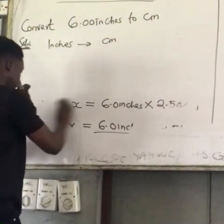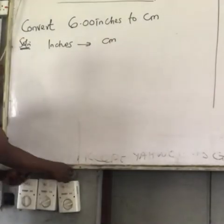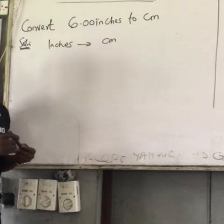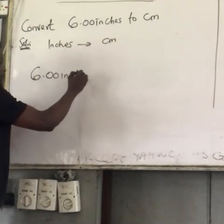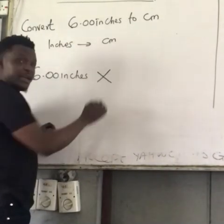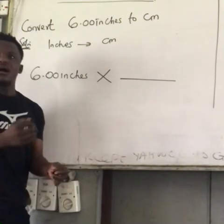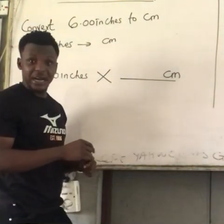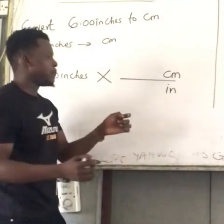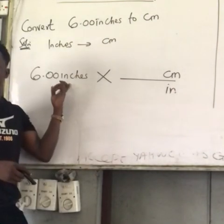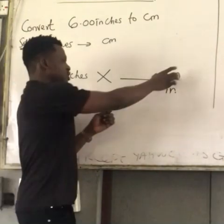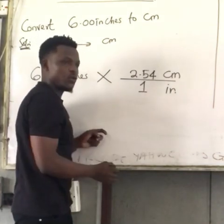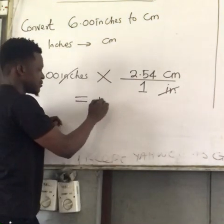Now let's use the conversion factor method to solve this. Anytime you use a conversion factor, put down the given value first — the given value is 6.00 inches. Put a multiplication sign, then draw a fraction line. I'm moving from inches to centimeters, so I put centimeters on top and inches on the bottom so they cancel. The relationship: 2.54 cm per 1 inch. Inches cancel out. The answer is 15.24 cm.